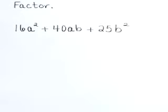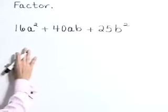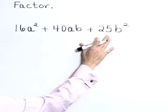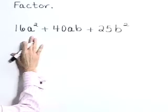16a squared plus 40ab plus 25b squared. Here we have a trinomial that looks like it fits that perfect square trinomial form.